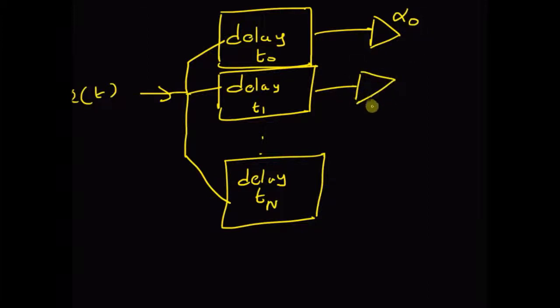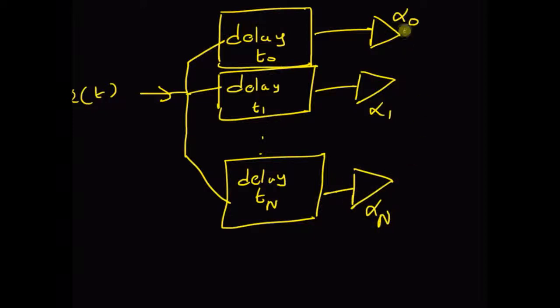The attenuation values are α₀, α₁, and so on up to αₙ. So the final output is the weighted sum of these delayed inputs.